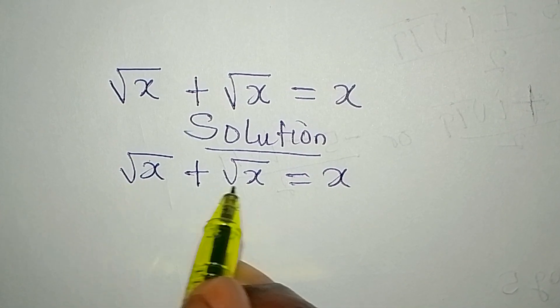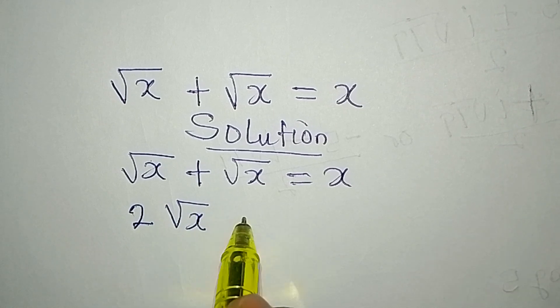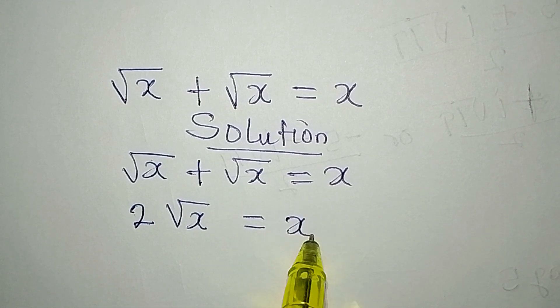Now, square root of x plus square root of x is 2 square root of x, and this is equal to x.